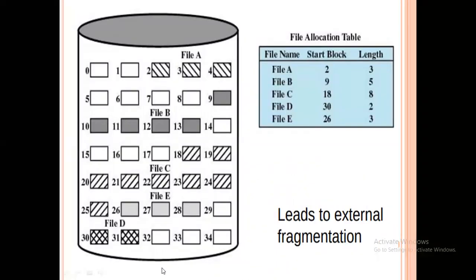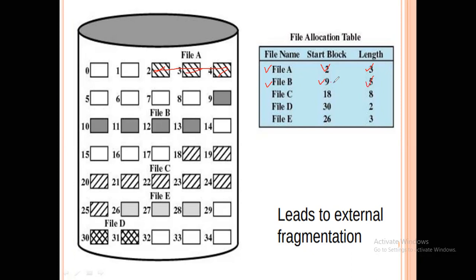Here is file A. The starting block address is 2 and the length is 3. So in contiguous allocation, if the first block is stored at 2, then the second will be 3 and third will be 4. Similarly, for file B, the starting location is 9 and its length is 5. So from 9, five consecutive blocks are stored: 9, 10, 11, 12, 13.